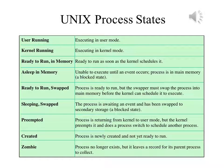A total of nine process states are recognized by the UNIX SVR4 operating system, as listed in the table on this slide. User running: executing in user mode. Kernel running: executing in kernel mode. Ready to run in memory: waiting for the kernel to schedule it. Asleep in memory: unable to execute until an event occurs — the process is in main memory but effectively blocked.